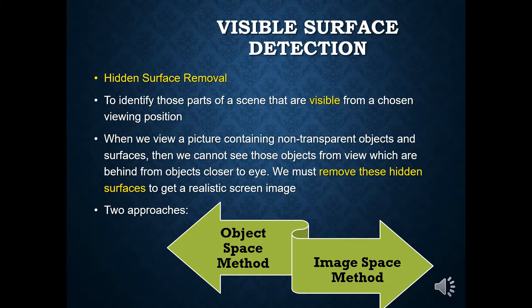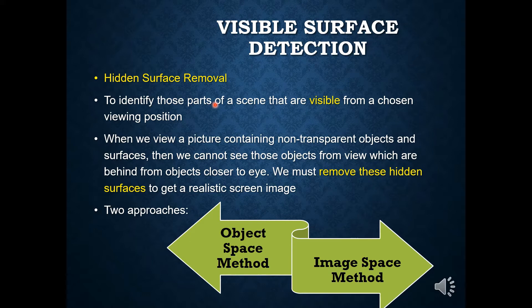What is visible surface detection? Basically, visible surface detection has another name known as hidden surface removal. Visible surface detection is going to detect the surface that is visible, and hidden surface removal is going to remove the surface that is hidden from us. So visible surface detection is used to identify those parts of a scene that are visible from a chosen viewing position.